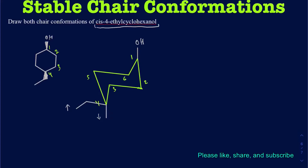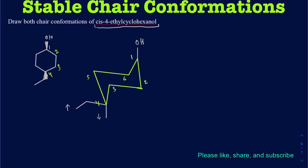Keep in mind both the OH and the ethyl group are CIS to one another. So since the OH was pointed up, you want to make sure the ethyl is also pointed up. So I'll take the other position out — this is how it's going to look like.